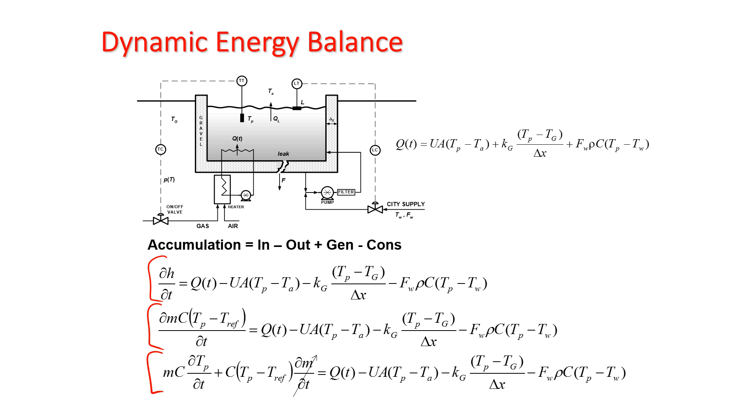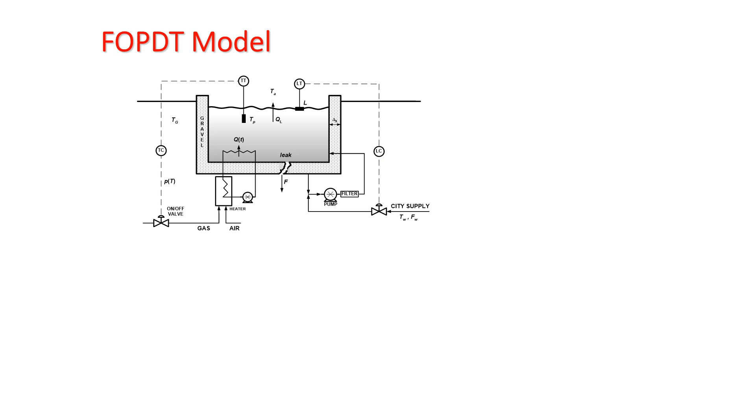I'm going to assume that if I have good level control here, just for the energy balance case, that this is going to equal zero, the change in mass with respect to time. That's going to be equal to zero, and that will help me simplify. And then I can relate this to a first order plus dead time model, just by assuming, I've got to make a couple other assumptions here.